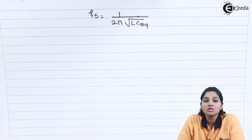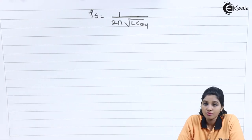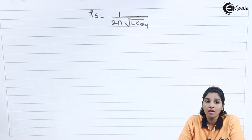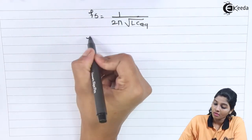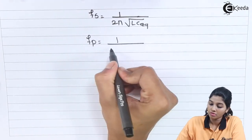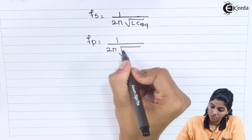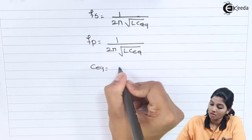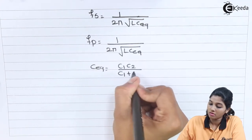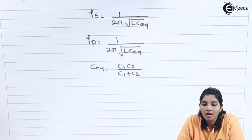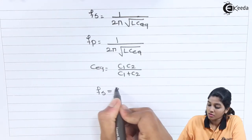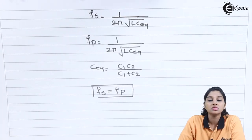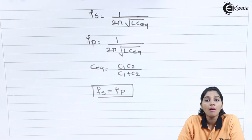The other frequency is the parallel resonant frequency Fp. In this case, the reactance of the RLC1 branch is equal to the reactance of C2. The parallel resonant frequency is given by: Fp = 1 / (2π √(L × C_equivalent)), where C_equivalent = (C1 × C2) / (C1 + C2). Since C2 is very much higher compared to C1, C_equivalent is approximately equal to C1, and Fs is approximately equal to Fp, meaning series resonant frequency is approximately equal to parallel resonant frequency.